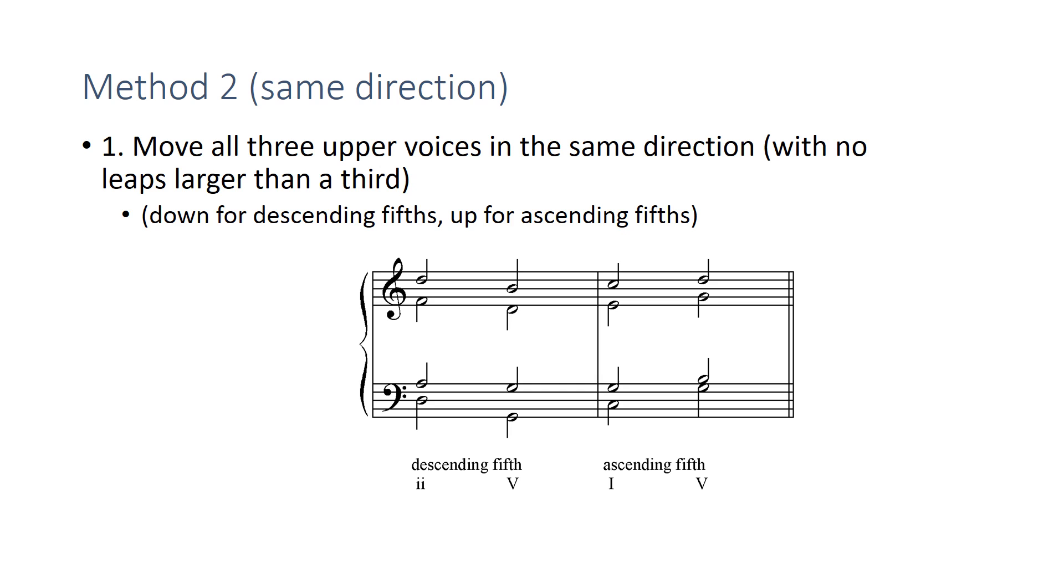You have to switch that for fourths, right? Okay, so here we see, if you have a descending fifth, the other voices can move to the nearest possible note in the same direction going down. And ascending fifth, the voices can move to the nearest possible note in the ascending direction going up. I'm sorry, to the nearest possible note going up. All right, so that's method two.